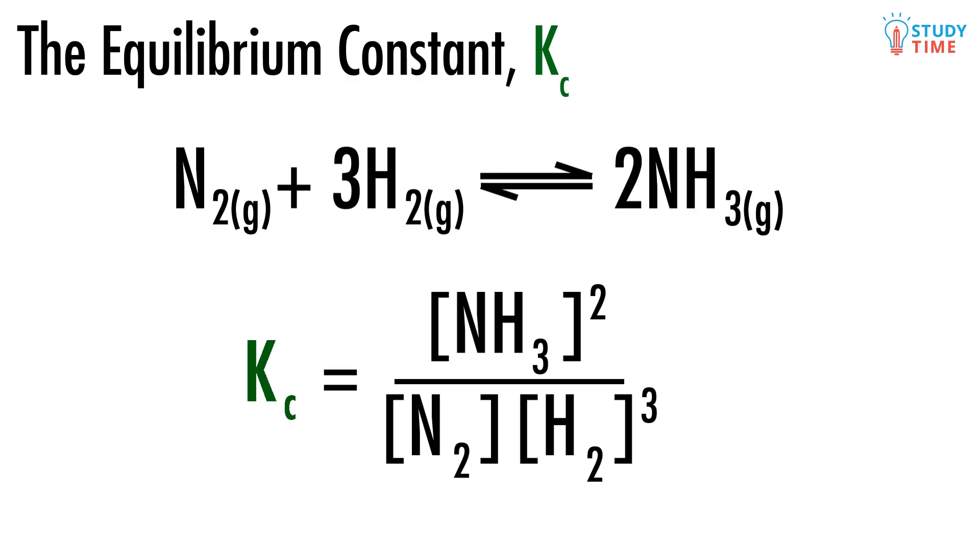This means if you add a load of product to the reaction, the equilibrium will shift to produce a load more reactant. And the K sub C ratio of product over reactant won't actually change. Because any change made to the reaction is always compensated.